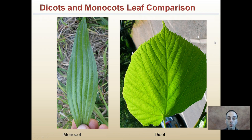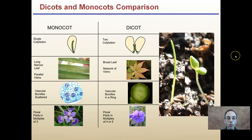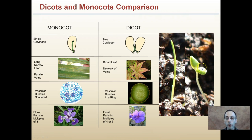Zooming in a little more, comparing the leaves — and there will be other videos to explain more about leaves. Monocots show that parallel venation; dicots have a more complex network of veins. Bringing in the seedlings now: monocots are that single blade that comes up, and dicots are those two seed leaves that emerge. This could be a pea plant, a squash plant, a watermelon — many different things fall into these categories.